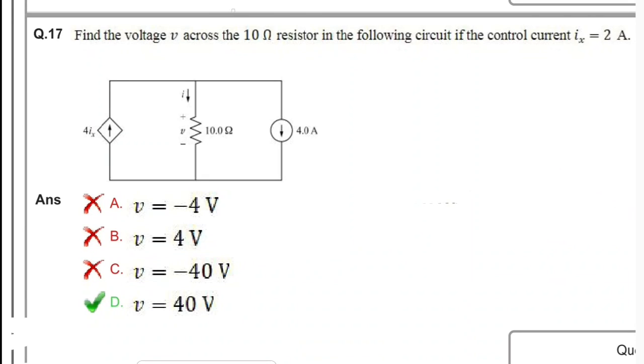Next question: find the voltage v across the 10 ohm resistor in the following circuit if the current controlled current ix is 2 amperes. Here the current source is 4 × 2 = 8 amperes flowing here, and 4 is going here. Applying KCL: 8 is coming in and 4 outgoing. Voltage drop v = i × R = 4 × 10 = 40 volts.